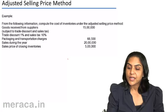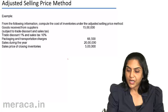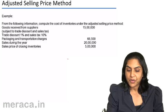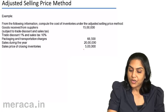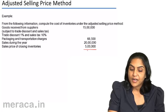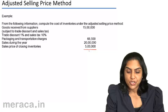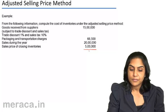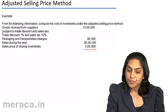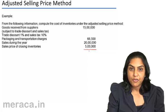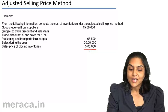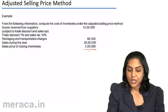Now, using the adjusted selling price method, if we have to find out the value of inventories, we need to take the sales price of the closing inventories and deduct the gross profit margin. However, the gross profit margin has not been given to us. Therefore, we need to compute and see what the gross profit margin is.